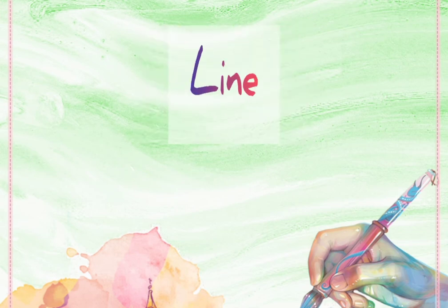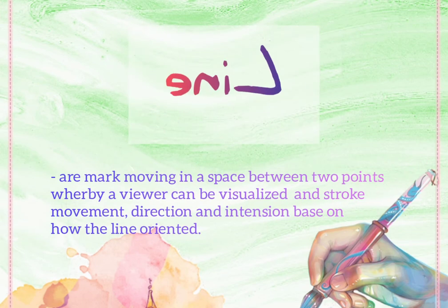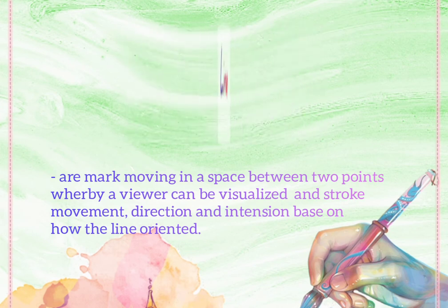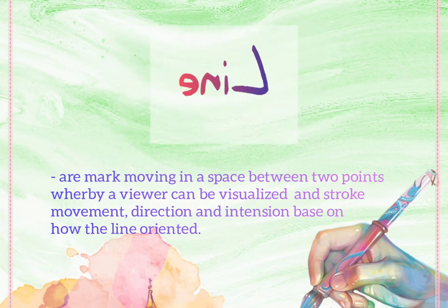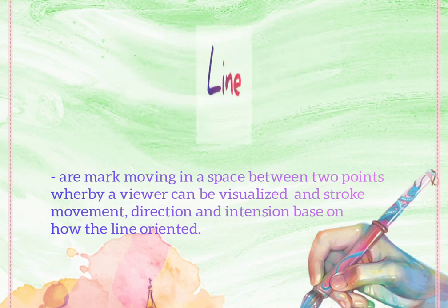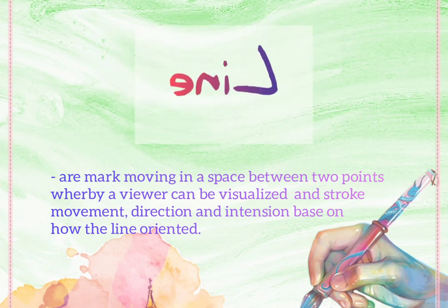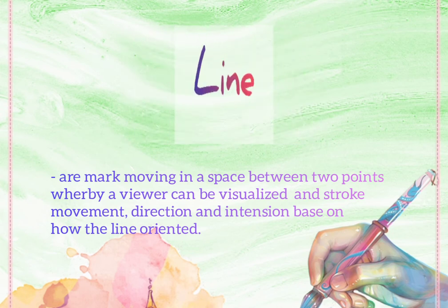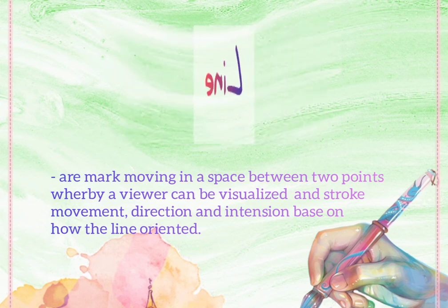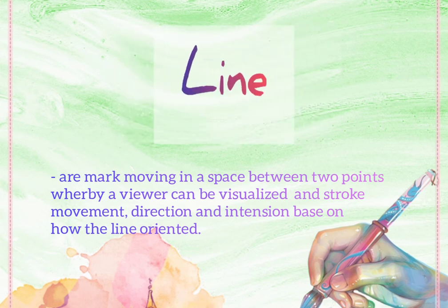The third element is line. Lines are marks moving in space between two points, whereby a viewer can visualize the stroke, movement, direction and intention based on how the line is oriented. Lines describe an outline capable of producing texture according to their length and curve.